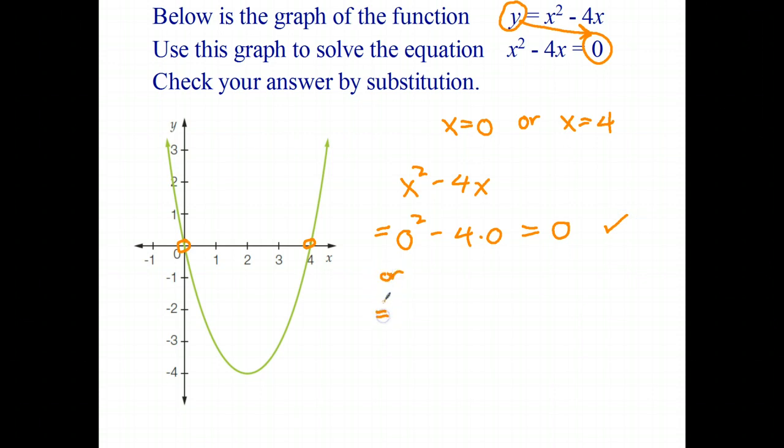And the other thing we substitute is 4. So let's see and that gives us 16 subtract 16 and that's also 0. So those are the two solutions to that quadratic equation.